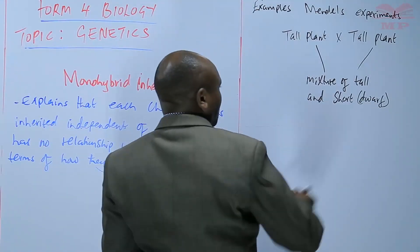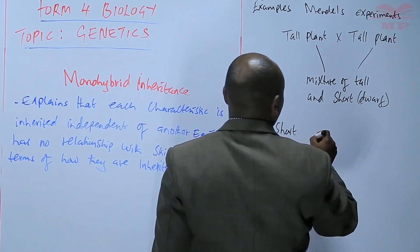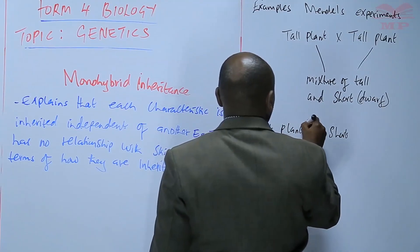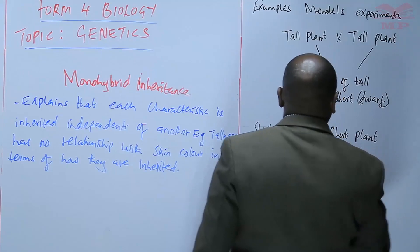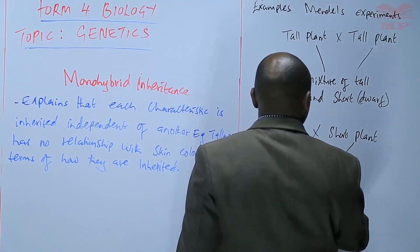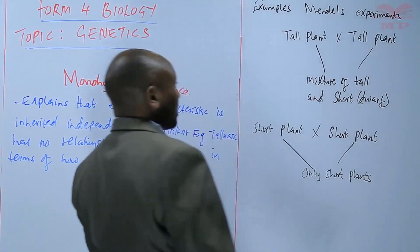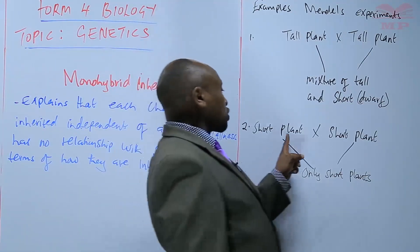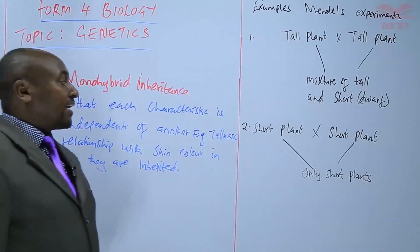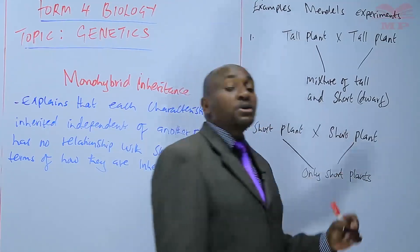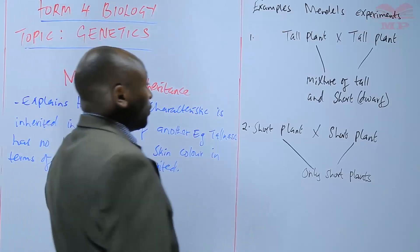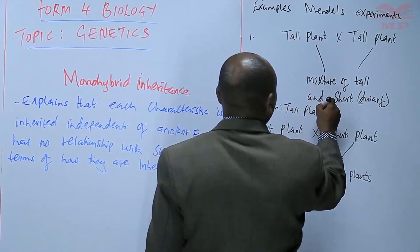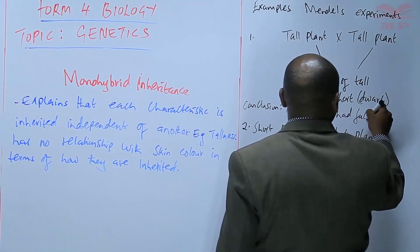He also experimented by crossing a short plant with another short plant. In this experiment, he got only short plants. So by crossing a short plant and a short plant and getting only short plants, the conclusion was that the short plants were pure breeds.